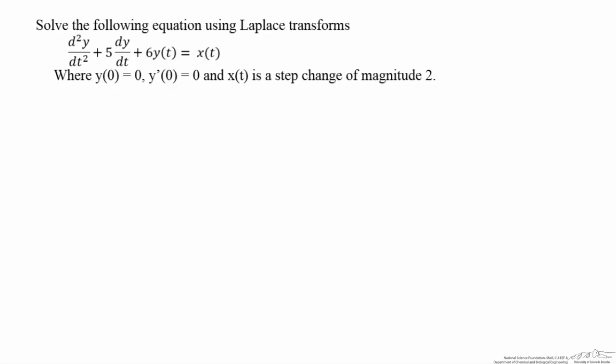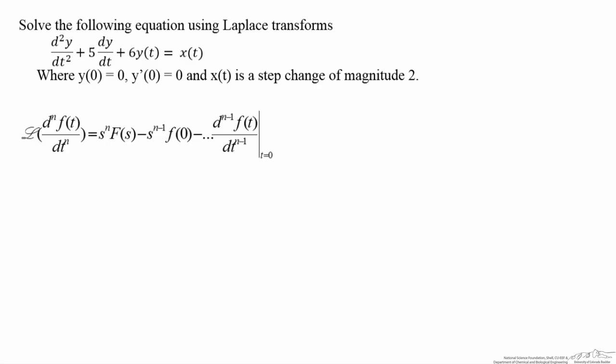First we're going to look at the derivatives. The analysis of the derivatives can be done by taking advantage of the Real Differentiation Theorem, which is shown right here. The Real Differentiation Theorem shows that any derivative can be evaluated using this equation. The first term represents s raised to the power of the order of the derivative multiplied by the Laplace Transform variable. All remaining terms have evaluations based on the value at time equals zero of the function and appropriate derivatives. Here, since y and y-prime both equal zero, these terms go away because they are identically zero.